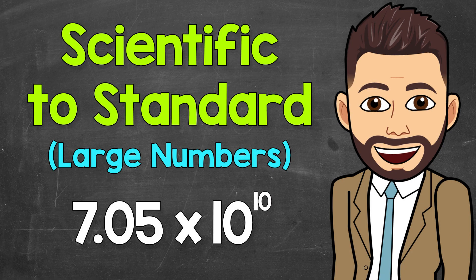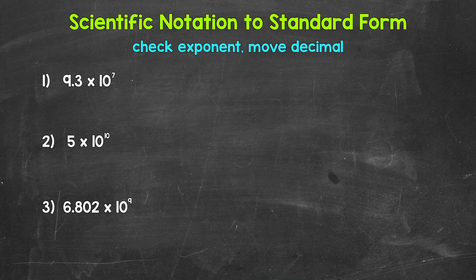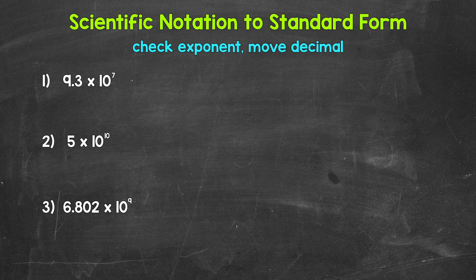Welcome to Math with Mr. J. In this video, I'm going to cover how to go from scientific notation to standard form, and we will specifically be working with positive exponents in this video, so large numbers. Remember, scientific notation is a way for us to write really large numbers or really small numbers in a shorter, more condensed way. We're going to go from scientific notation to standard form, which is basically how we typically think of and write numbers.